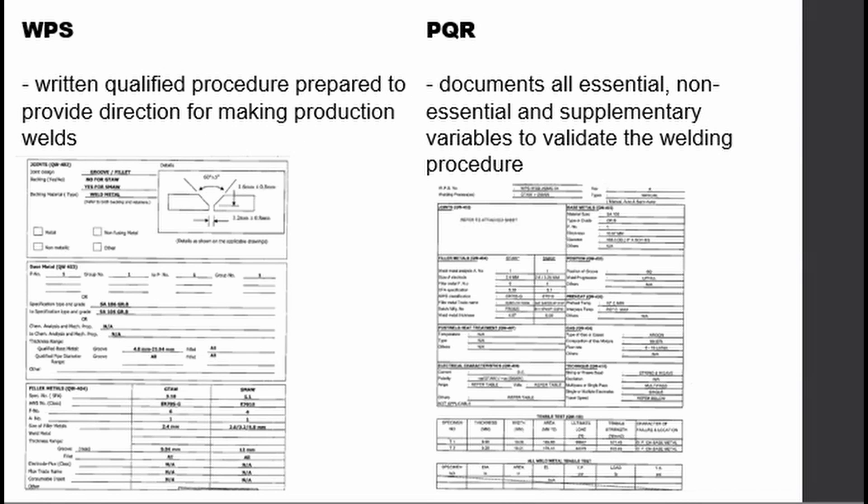The WPS and PQR are written very similarly, but they have a lot more differences than it shows. The WPS is like a written procedure or methodology that describes how the welder will complete the welds. The PQR, meanwhile, qualifies whether it will meet the mechanical properties of the material.